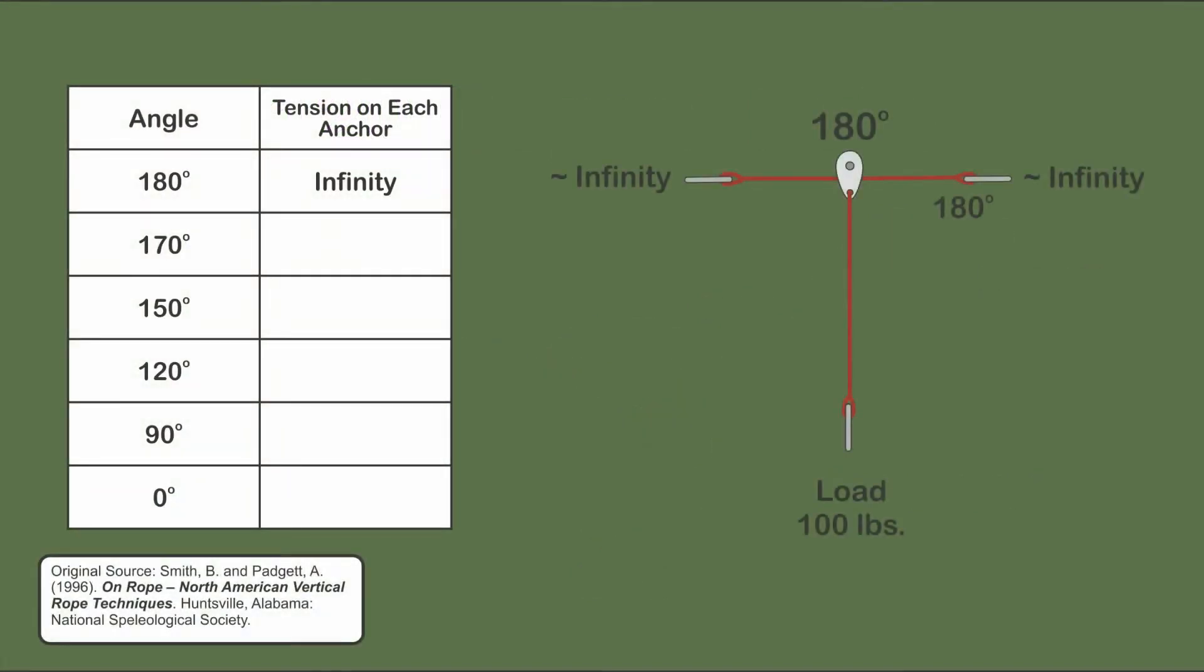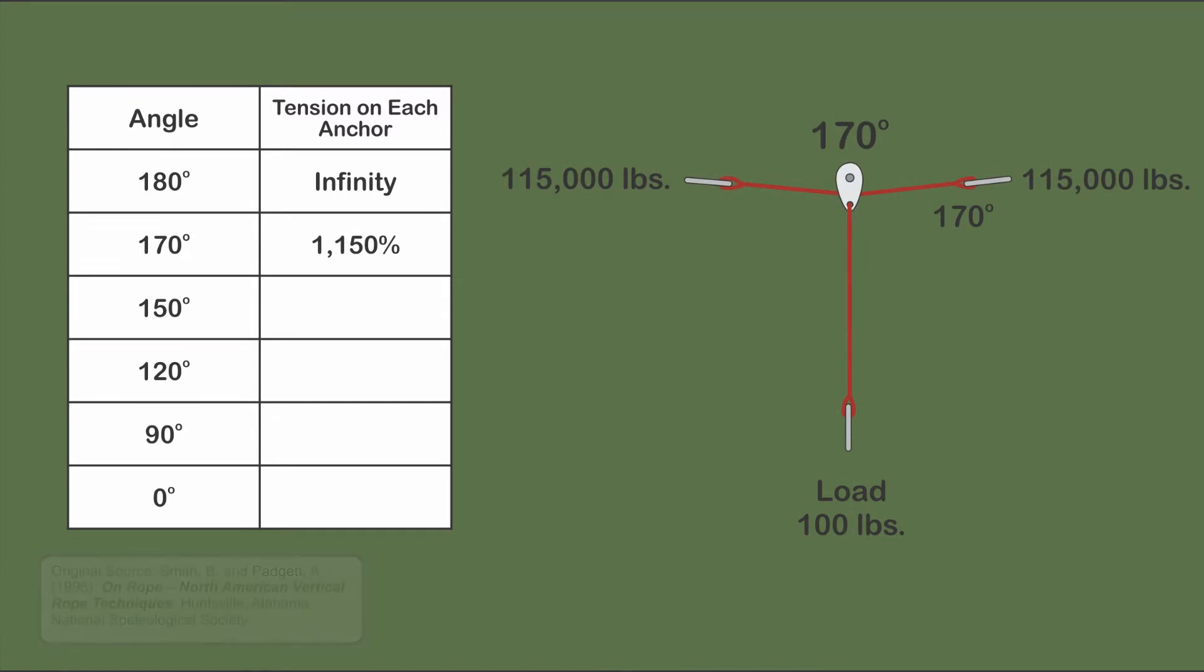As the angle between two anchors decreases from 180 degrees or being taut to directly next to each other, the force on each anchor decreases from near infinity to 50%.